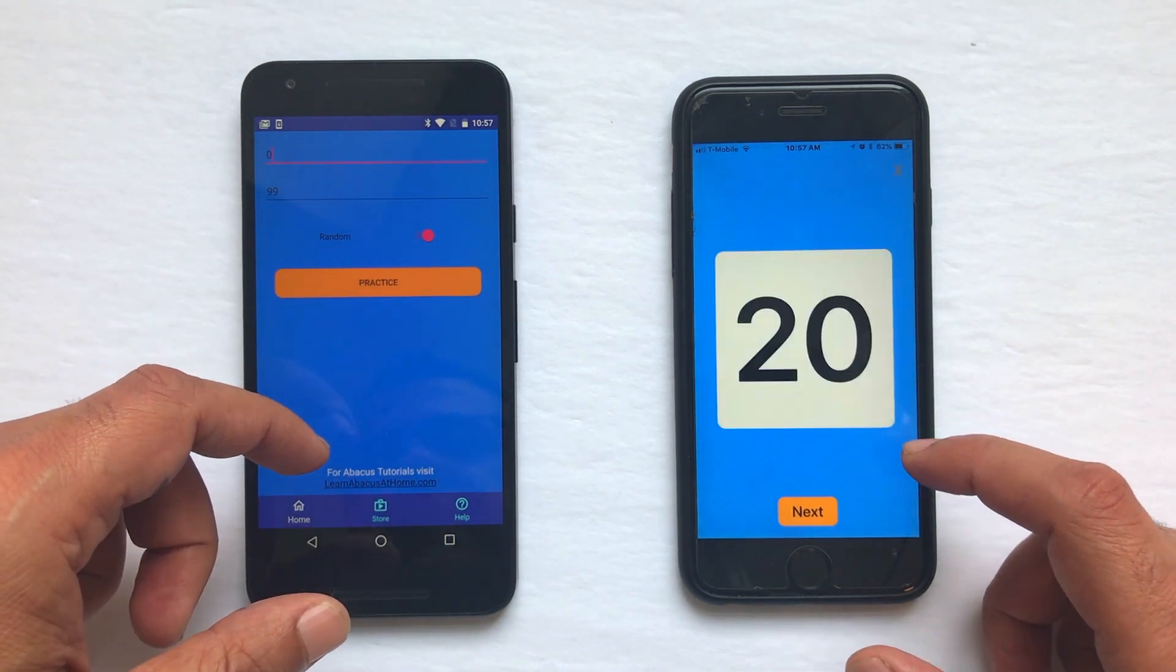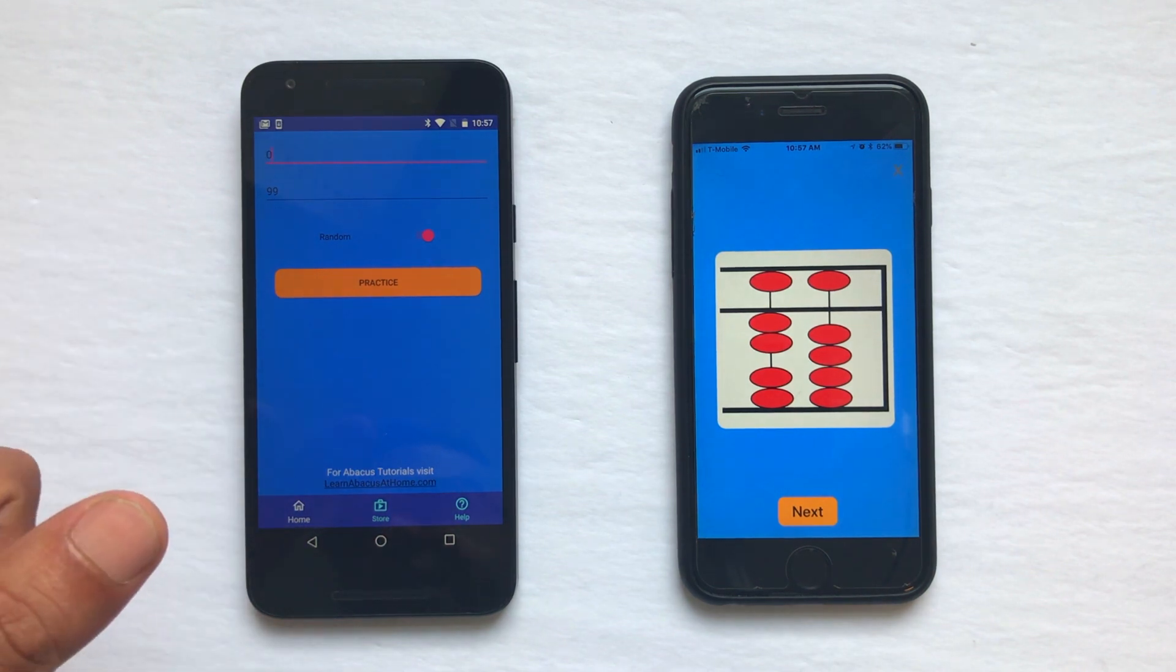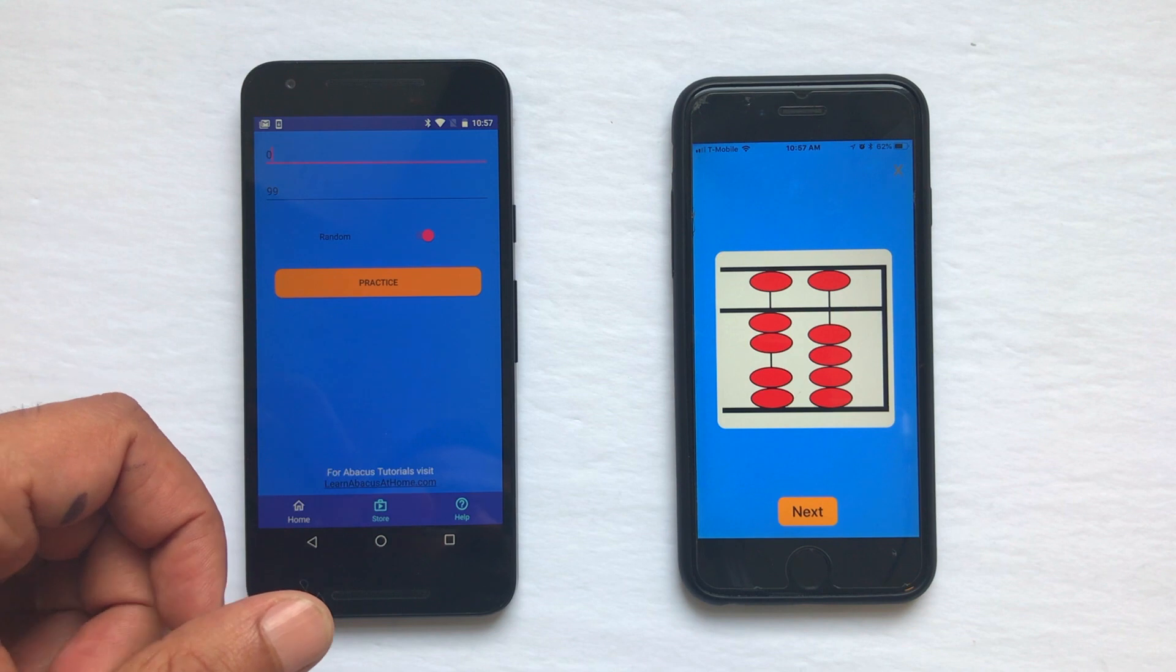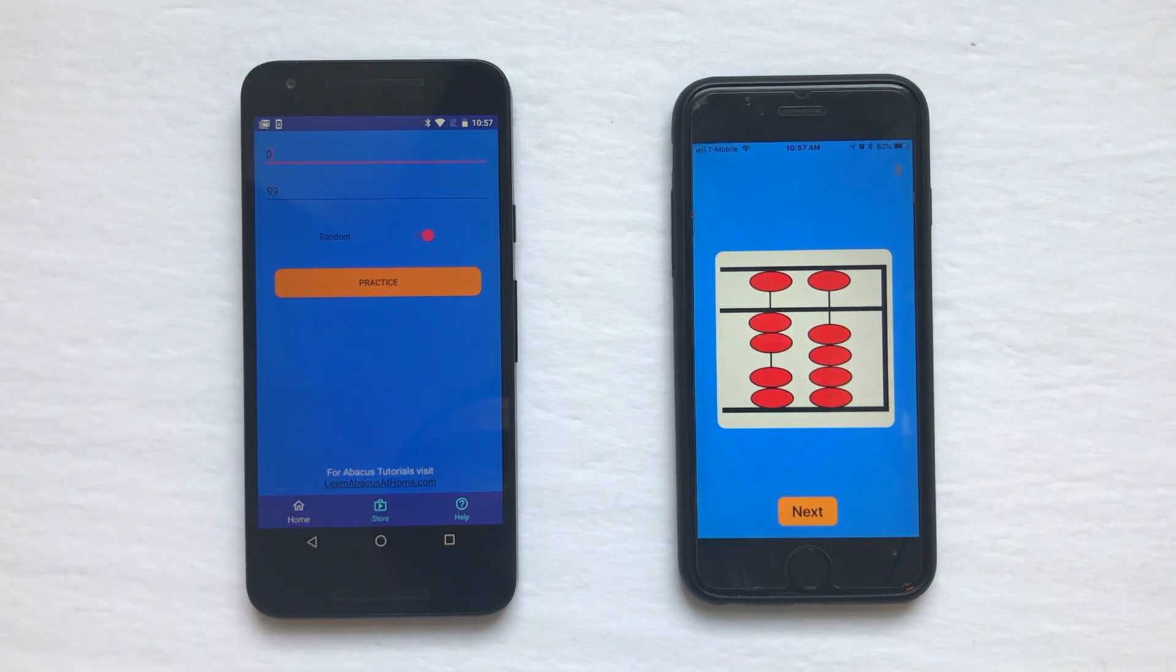It's called Abacus Flashcards—go check it out. A link is provided in the comment section below. Thanks again for watching, and go check out the app. Take care.